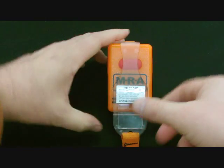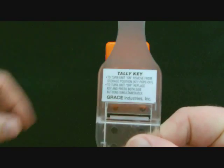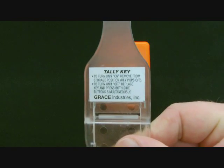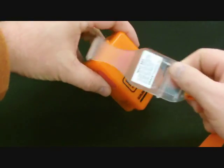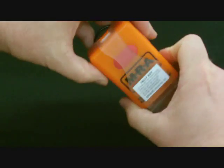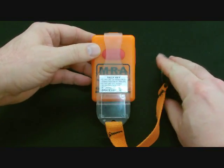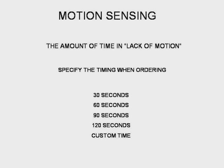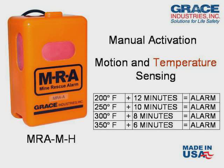The tally key is typically left at a point where the MRA is issued, often referred to as the tally board. By viewing the tally board, supervisors and co-workers can be aware of which MRAs are in or out of service. The tally key is not required to reset the MRA — reset is accomplished by simultaneously pressing the buttons on each side of the device. The tally key is required to turn off the auto activated MRA.